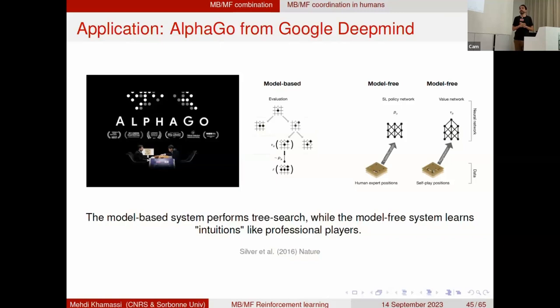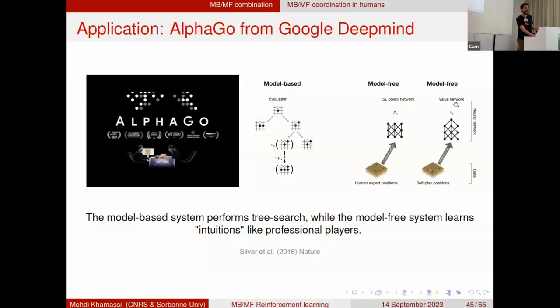In AI, the AlphaGo algorithm from Google DeepMind explicitly combines model-based and model-free processes. Model-based builds a tree of all possible game configurations; model-free deep neural networks trained on human expert databases learn both an actor (best action per position) and a critic (expected value per configuration). In the hybrid strategy, value predictions from model-free guide which branches of the tree to explore during mental simulation. The neuroscience inspiration is explicitly acknowledged, highlighting the opportunity for exchange between disciplines.